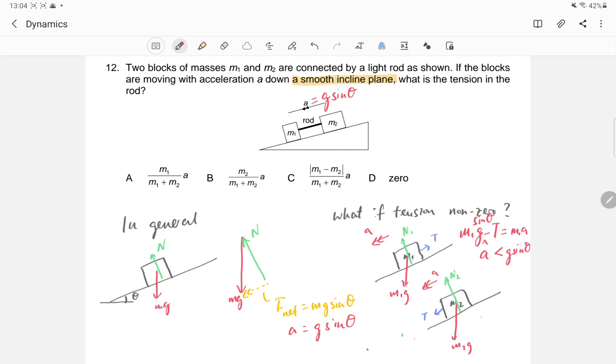In the second case, it will be m2g sine theta plus T equals m2a, and that will mean that a will be greater than g sine theta. So that will contradict the overall situation because we expect both of them to have the same acceleration; they are not supposed to be different.